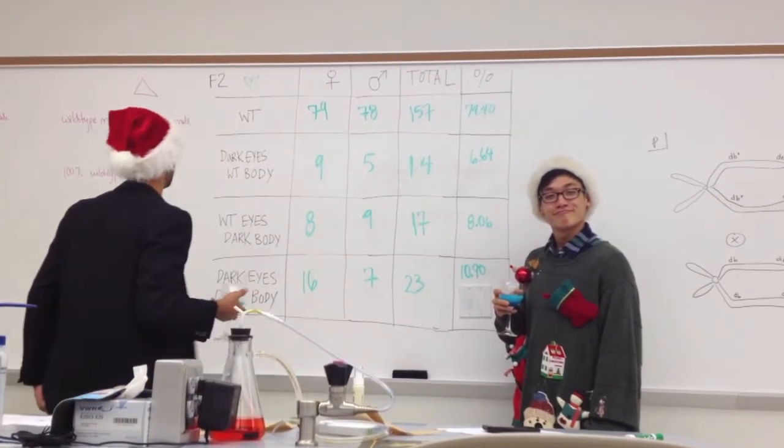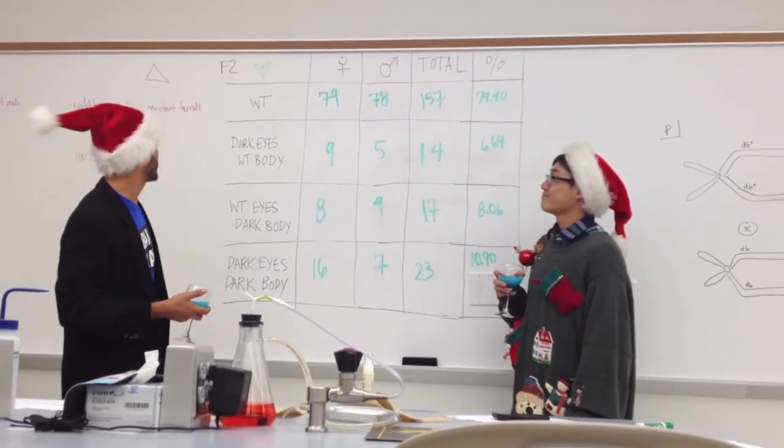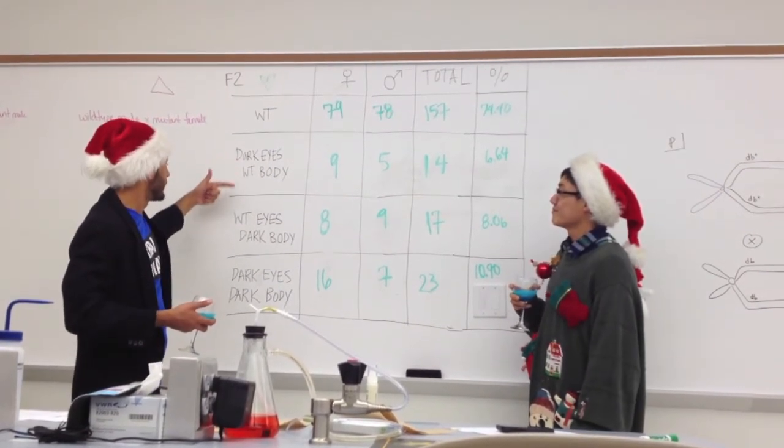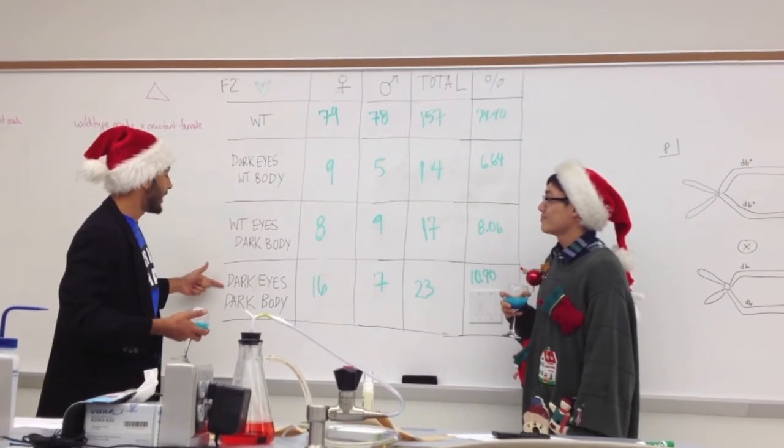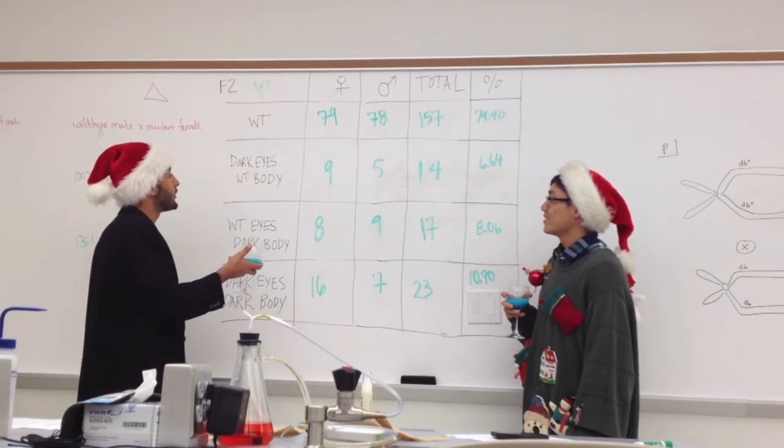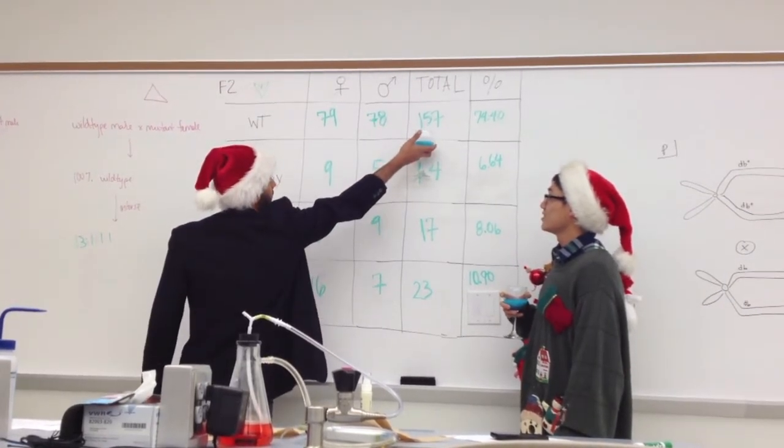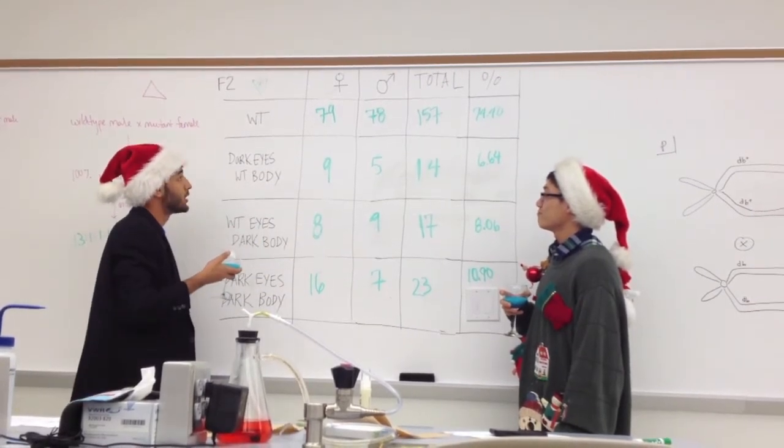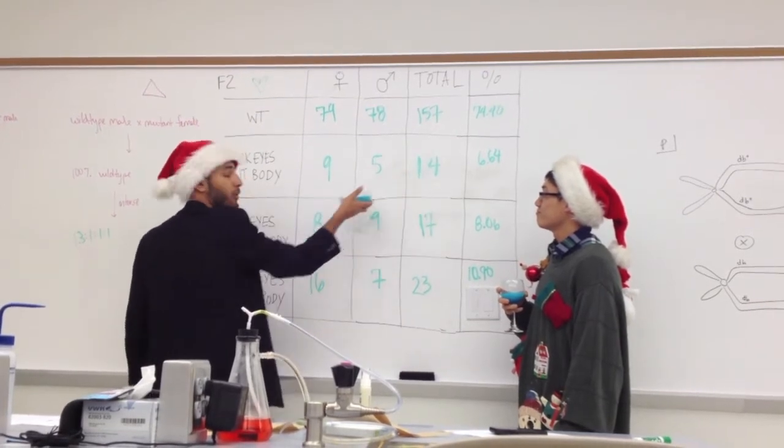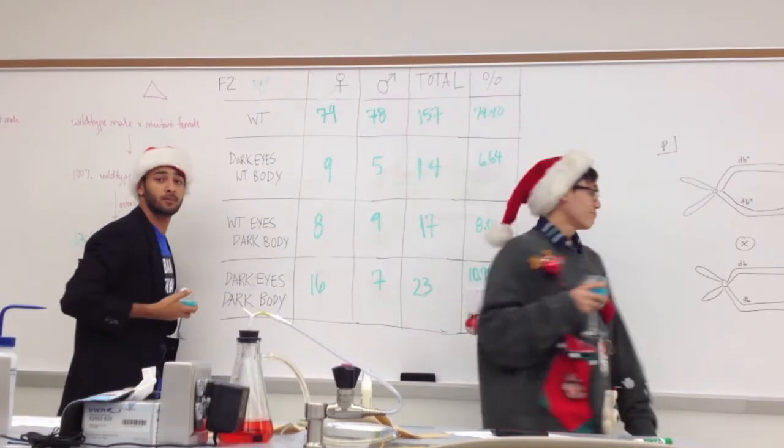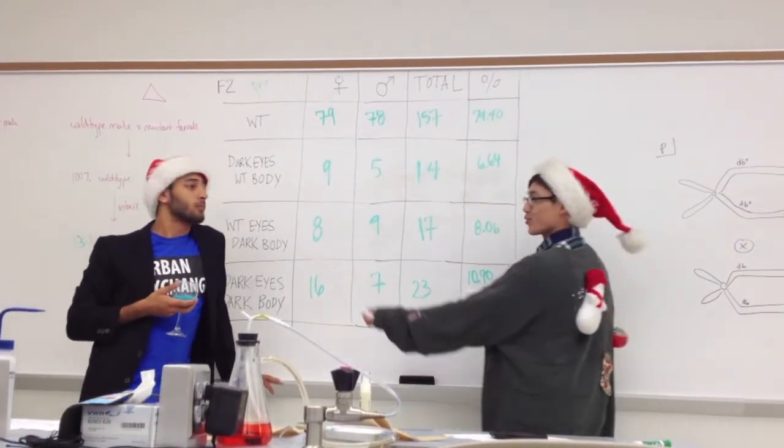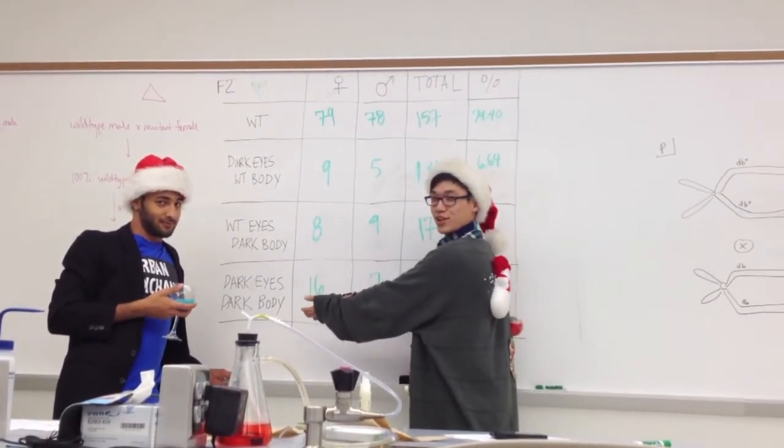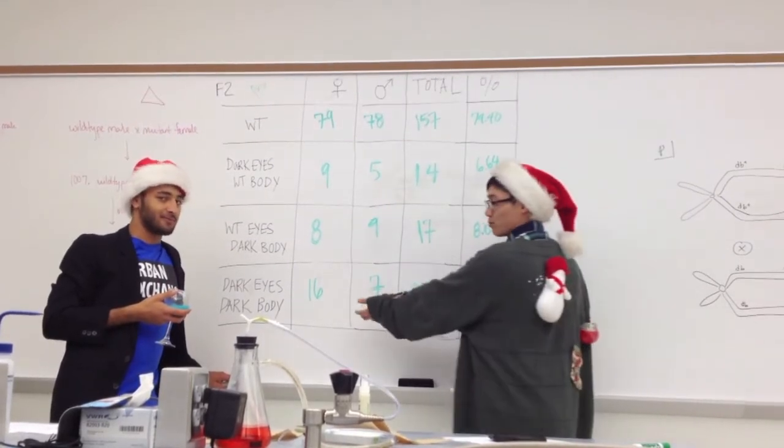For our F2 heart cross, we had the same 4 phenotypes. The wild type phenotype, the dark eyes with wild type body, wild type eyes with dark body, and dark eyes with dark body. For the wild type phenotype, we had a total of 157 flies with both sexes being present. For the dark eyes with wild type body, we had a total of 14 flies with both sexes being present. For the wild type eyes with dark body, we had 17 total with both sexes being present. And for the dark eyes with dark body, we had 23 present with both sexes being present.